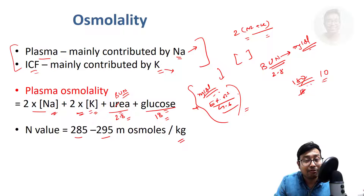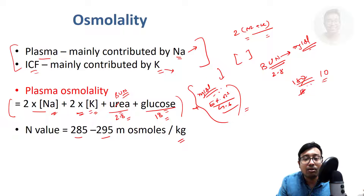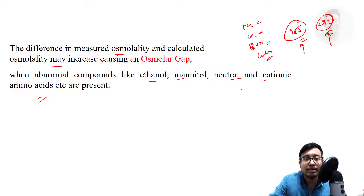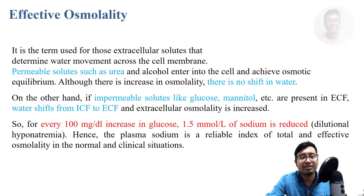If the examiner asks about anything else in this formula, that means you are already scoring well. Then you say there is a correction factor: ethanol divided by 4.6, which gives us an idea of the osmolar gap and indicates any alcohol poisoning or other abnormal constituent in plasma. Very, very, very important.